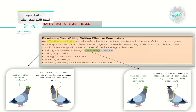Number two: using a quotation. A quotation is very important to make your effective conclusion meaningful. Don't forget to put quotation marks around the quotation you are using from research in your essay. Number three: calling for some kind of action. You should put some kind of action, mention it, ask for example, and so on.